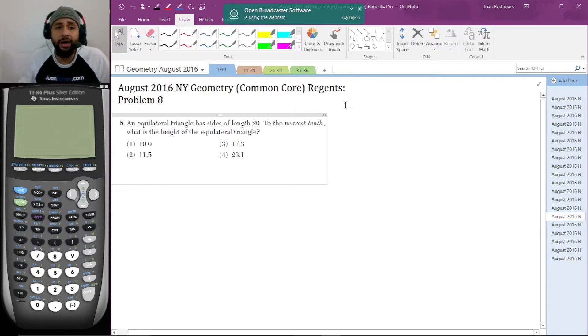Here's the problem: An equilateral triangle has sides of length 20. To the nearest tenth, what is the height of the equilateral triangle? The choices are: 10, 11.5, 17.3, or 23.1.